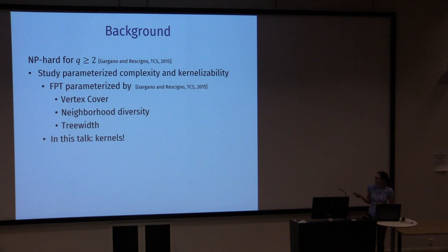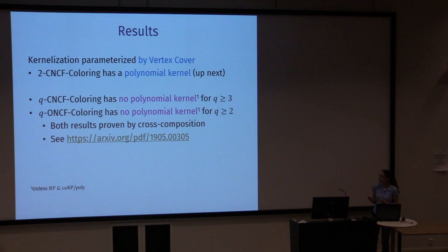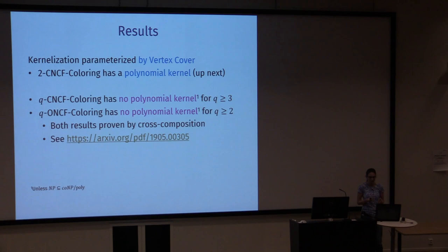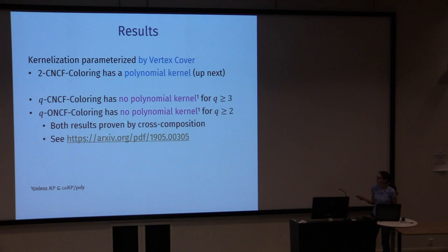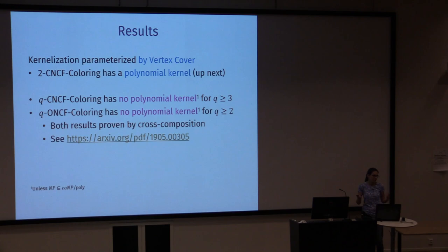In this talk I want to talk about kernelisation for the problem, parameterised by the size of a vertex cover. I want to show that 2-CNCF colouring has a polynomial kernel with this parameter, and we get a dichotomy: with at least three colours, Q-CNCF colouring no longer has a polynomial kernel, and Q-ONCF colouring does not have a polynomial kernel even with two colours. Both negative results are proven by cross-composition, but I will not give those proofs here.